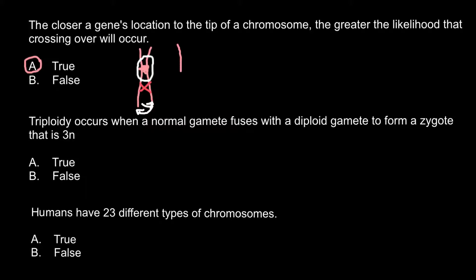For example, if I drew the same pair of chromosomes, such crossing over may happen here. Once again, the closer a gene is to the tip, the more chances that the gene close to the tip would end up on the other homologous chromosome. And yet another example where crossing over may happen very close to the end — still the gene that is very close to the tip would change places, but those close to the center have less and less chances.